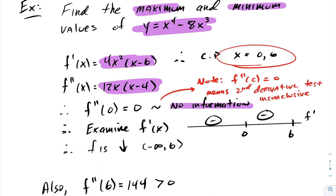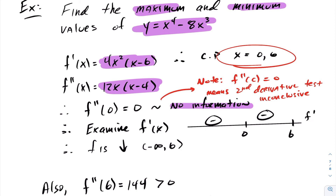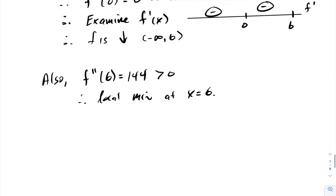We're now in a situation where we cannot use the second derivative test to assess whether we're at a local max or local min. Therefore, we have to go to our interval of f prime and examine. Upon examining, we see that at 0 we do not have a local max or local min, because the function is decreasing throughout. Examining f double prime at the other critical point, 6, we find we get 144, which is greater than 0. Because of that, we have a local minimum at 6.